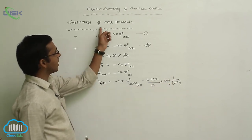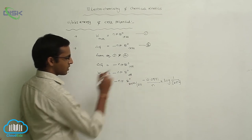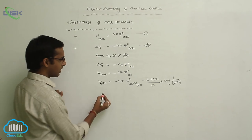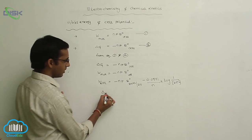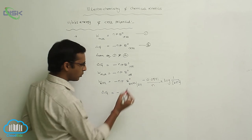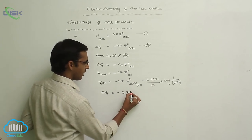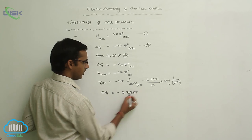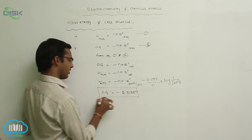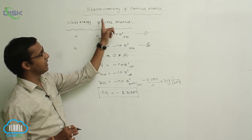This is Gibbs energy and cell potential. The total equation for the equilibrium reaction gives delta G equals minus 2.303 RT. This is the equilibrium reaction for the calculation of Gibbs energy and cell potential.